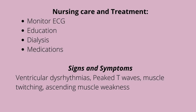We also give calcium gluconate to bind potassium, and 50% glucose with insulin to help shift potassium out of the blood. Signs and symptoms of hyperkalemia include ventricular dysrhythmias, increased bowel motility, a peaked T wave on ECG, and muscle twitching and paresthesia early on. Late symptoms include ascending muscle weakness, as the body becomes exhausted from over-excitability.